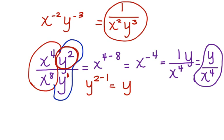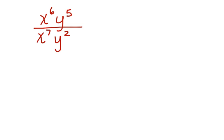That's a little tricky. Let's look at another one like that. x to the 6th, y to the 5th, divided by x to the 7th, y squared, equals x to the 6th divided by x to the 7th is going to leave me with x to the negative 1,